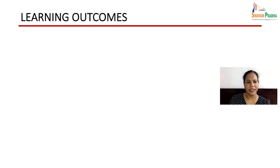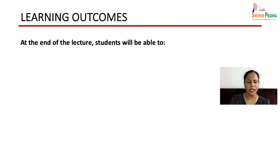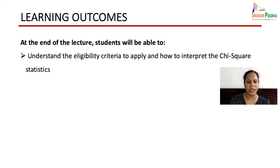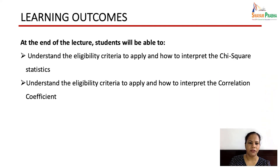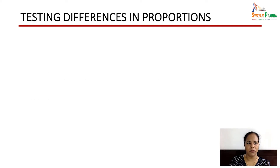Let us see what are the learning outcomes of today's lecture. At the end of the lecture, students will be able to understand the eligibility criteria to apply and how to interpret the chi-square test. We will also be talking about the correlation coefficient — understanding the eligibility criteria to apply and how to interpret it.